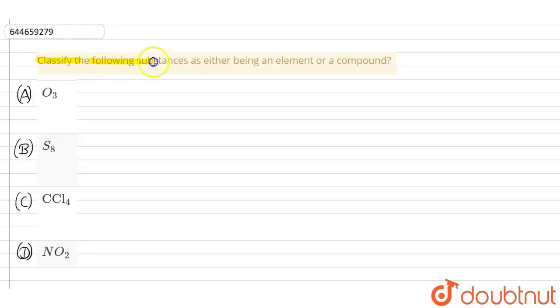The question is classify the following substances as either being an element or a compound. So we have four options given and four substances are given. We have to identify which is the element or which is a compound.